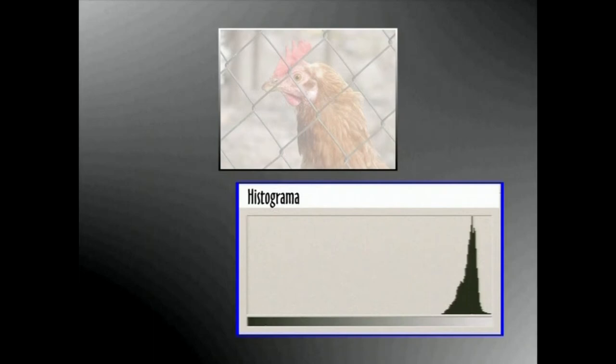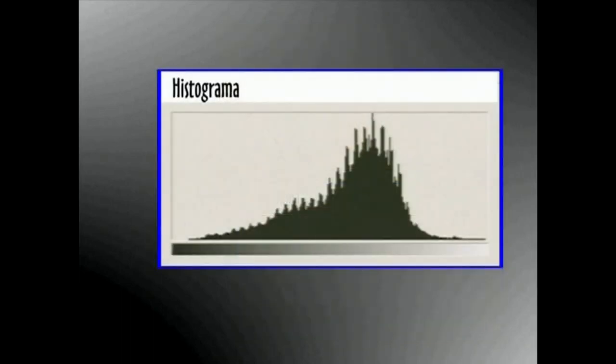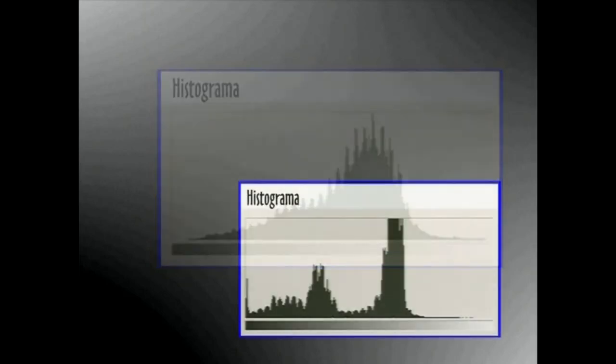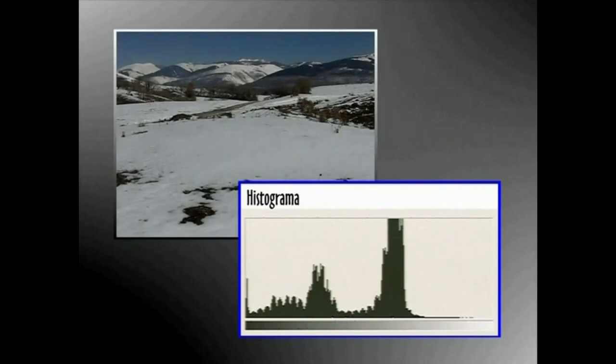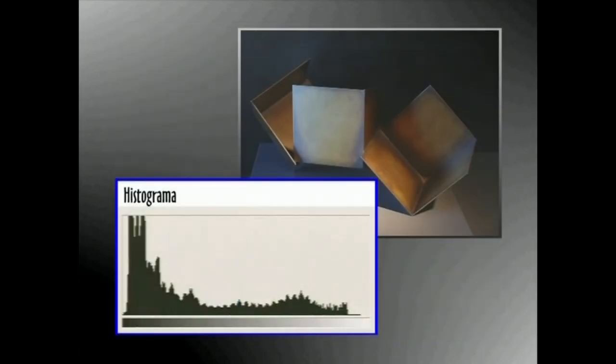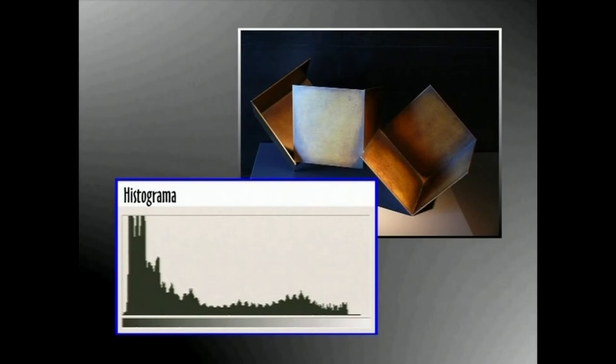Irudi batek, zuriaren eta beltzaren artean dagoen balio gama osoa jaso behar du. Halere, badira salbuezpenak: paisaia elurtuak, edo barruti ilunak erakusten dituzten argazkiak, esaterako.